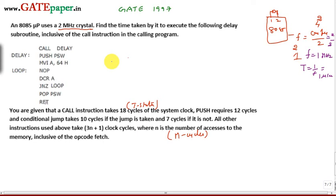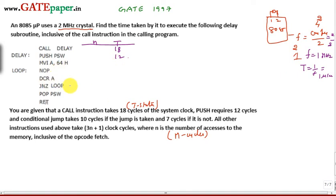Now we calculate the number of machine cycles (n) and T-states for each instruction. The T-states for known instructions: CALL DELAY = 18, PUSH = 12. For MVI A, 64H — a 2-byte instruction — it takes 2 machine cycles. For instructions not given, we compute T-states as 3n + 1 for 2-byte instructions.